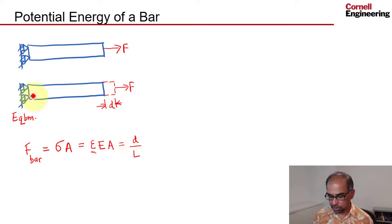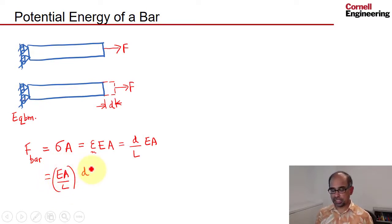I can rearrange and write this as EA over L times D. And then if I use the analogy with the spring, where the force in the spring is K times D, I can call this the stiffness of the bar, K_bar.